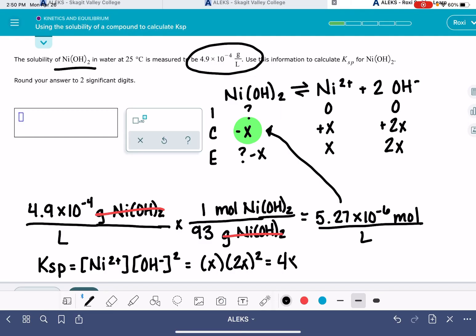So this is going to give us, when it's all said and done, 4X cubed. Now we have determined that the value of X is 5.27 times 10 to the minus 6. So this is our value of X, and we're just going to take that number and plug that into the 4X cubed. 4 times 5.27 times 10 to the minus 6 cubed. That will give us our KSP value.